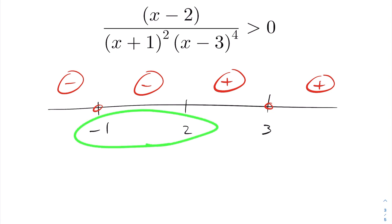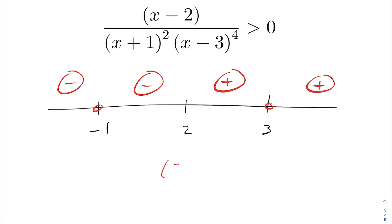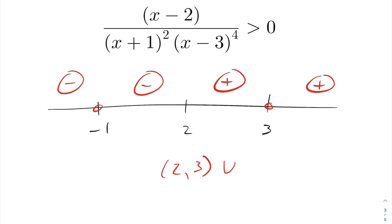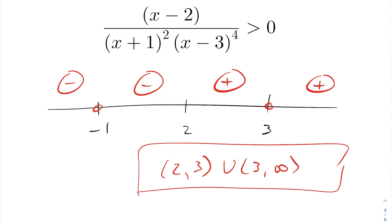Anything between negative one and two is negative, and anything less than negative one is also negative. We want the expression greater than zero. That occurs from two to three — open bracket, since three is undefined — union three to infinity. This is our answer for this example.